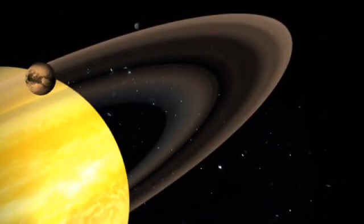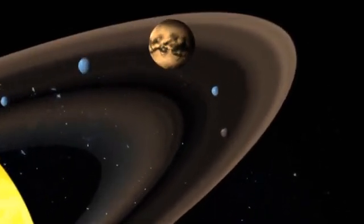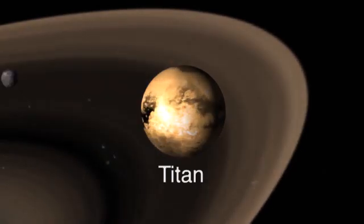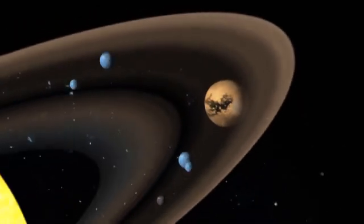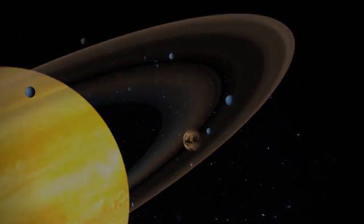Saturn has 62 confirmed moons, 53 of which are named. Its largest moon, Titan, is the only moon in the solar system to have its own substantial atmosphere. Saturn has hundreds of very small objects, or moonlets, dotting its numerous rings.